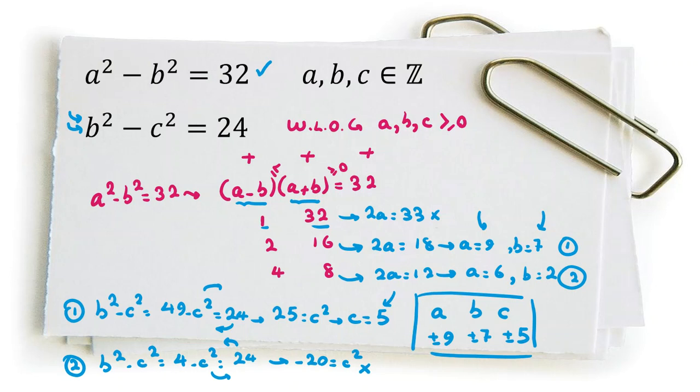For example, plus 9 plus 7 minus 5, plus 9 plus 7 plus 5, minus 9 plus 7 minus 5. We have 8 possible cases for signs.